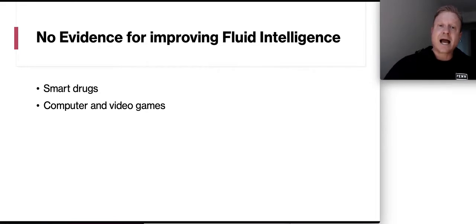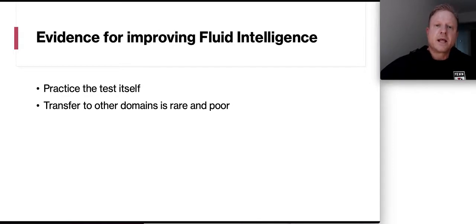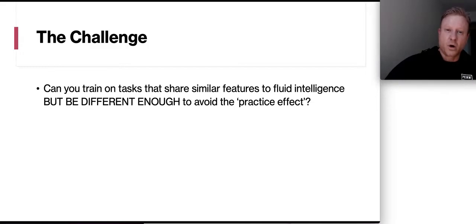Now, right now, there isn't actually any evidence for improving fluid intelligence. Now, there are those smart drugs on the market. No evidence yet that they actually work. Same thing for claims on some computer and video games, that they make you smarter. Really no evidence that we've seen yet scientifically that they work. Now, the evidence for improving fluid intelligence. Right now, all we have is practice on that information itself. But transferring to other domains has been shown to be rare as well as poor. So the challenge we have, can you train on tasks that share similar features to fluid intelligence, but be different enough to avoid the practice effect?